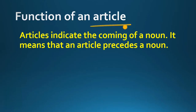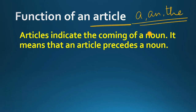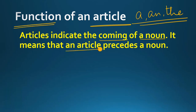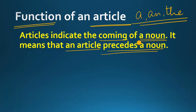What are articles? We all know these are 'a', 'an', and 'the' — the three words which we call articles. First of all, I will tell you what is the function of an article. An article indicates the coming of a noun — it means that an article precedes a noun. So in a sentence, if we have used an article, then the word after the article will be a noun.